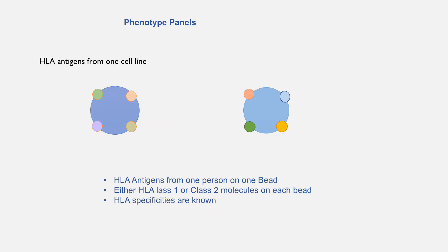The second type of beads are called phenotype panels or phenotype beads. These beads have HLA antigens derived from one person on their surface, so each bead has either HLA class 1 or class 2 antigens. In this case, one bead has HLA class 1 antigens derived from one person and the second bead has HLA class 2 antigens. These beads are used to calculate PRA. If we have 100 beads with HLA class 1 antigens and 100 beads with different HLA class 2 antigens, we can calculate PRA based on the number of beads that have a positive reaction.